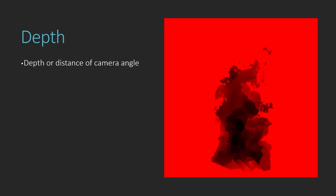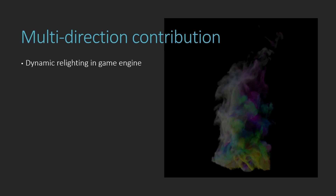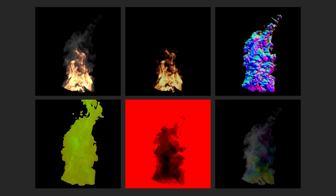The depth map captures the distance from the camera to the simulation, useful for transparency and depth blending with the effect. The multi-directional contribution lets you play with lighting in the game engine, faking or adding post-processing lights with a shader based on this texture. You don't need to use all of them — the more information you include, the more complex and larger your shader needs to be.